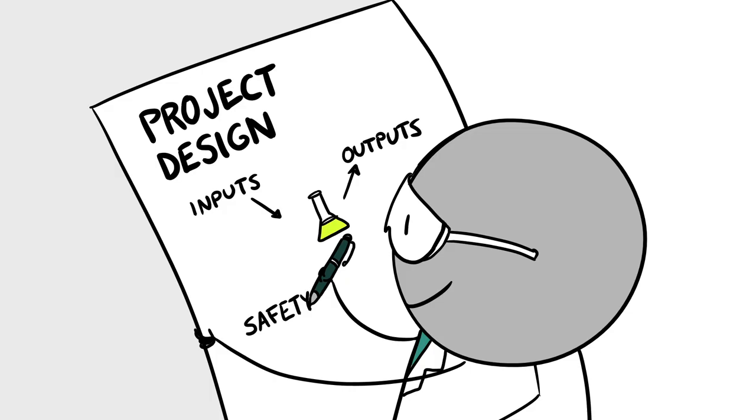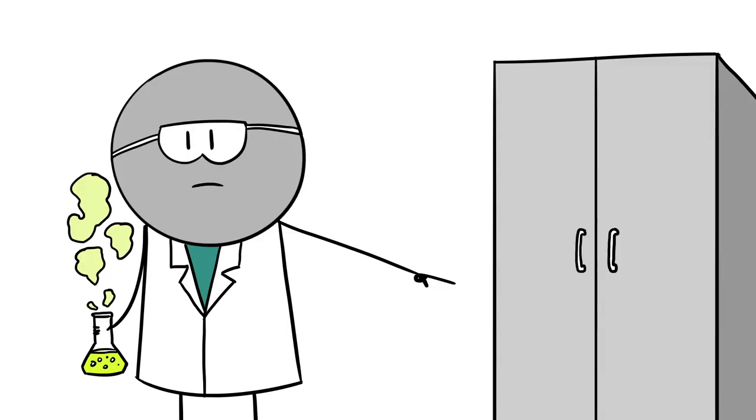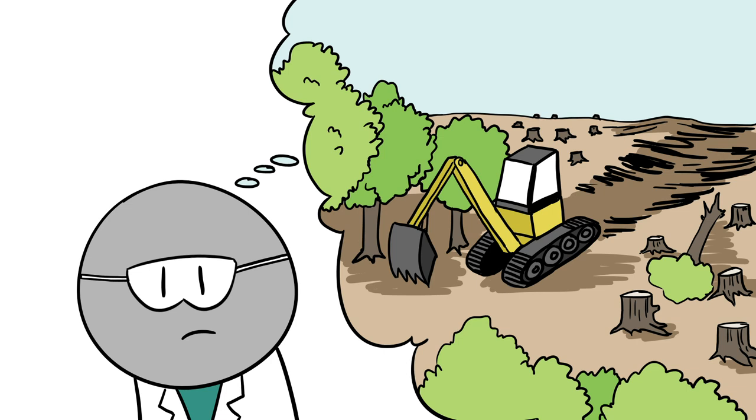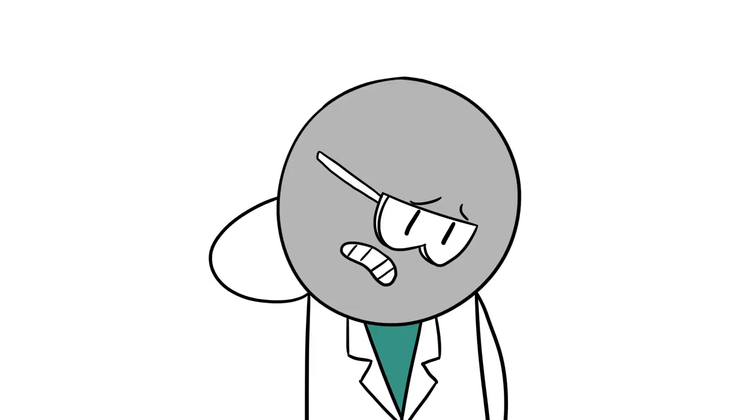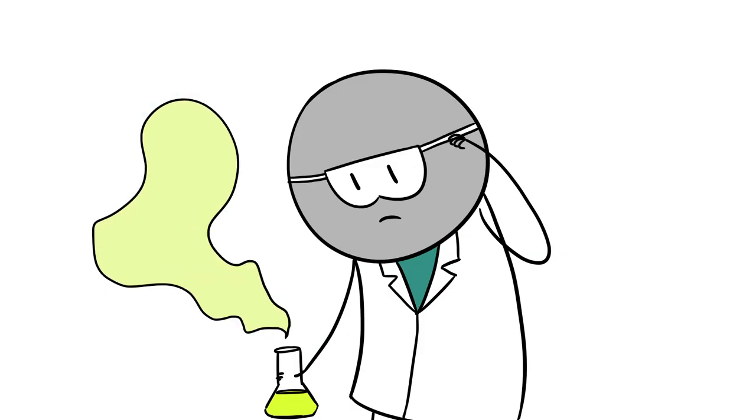A systems thinking and green chemistry approach starts before you begin your process. For example, have you thought about where your inputs are sourced? Are they from sustainable sources? How efficient is your process? Have you avoided the formation of harmful byproducts? If not, have you identified and quantified them?